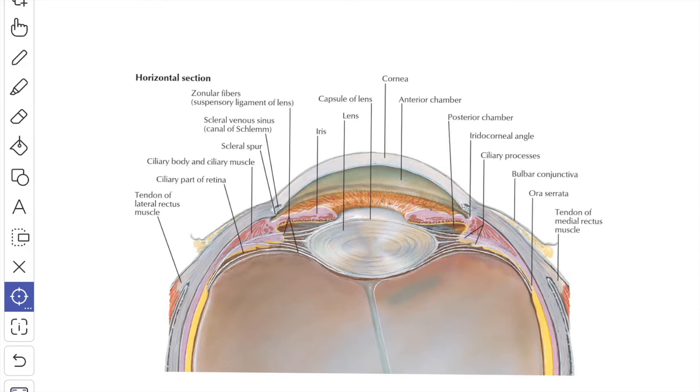It contributes about 15 diopters to the total 58 diopter power of the eye. The advantage of the lens over other refractive media is that it can change its diopter power for near or distant vision by adjusting the curvature of its anterior surface. The lens absorbs much of the ultraviolet light.